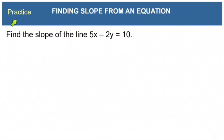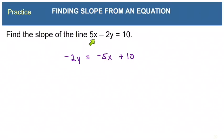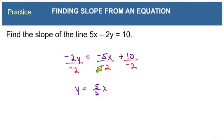Practice: find the slope of 5x minus 2y equals 10. Solving for y: move 5x to the right side (turning it negative), then divide each term by negative 2. Negative 5 over negative 2 simplifies to positive five-halves, and 10 over negative 2 is minus 5. So y equals five-halves x minus 5, and the slope is five-halves.